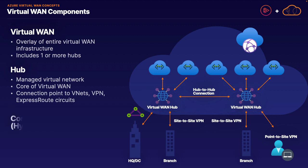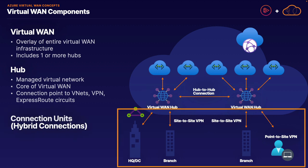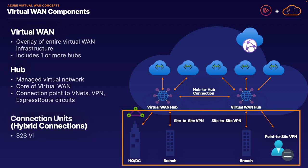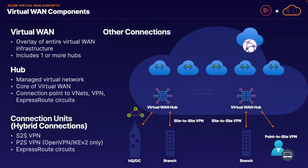Our next component is connection units — these are specifically your hybrid connections connected to your Virtual WAN hubs, such as site-to-site VPN, point-to-site VPN using OpenVPN and IKE version 2 only, and ExpressRoute circuits. One interesting note is that site-to-site and point-to-site VPN connections are two separate connection types, not built into the same VPN gateway as with an unmanaged virtual network. Our last component for now is simply other connections: virtual network connections, meaning Azure Virtual Networks connecting to the hub, and hub-to-hub connections.